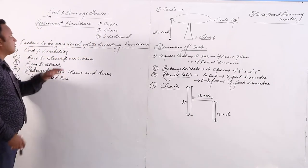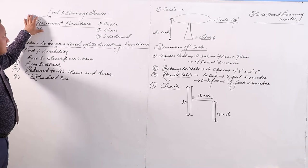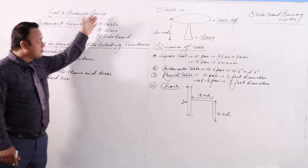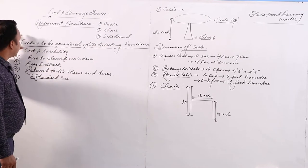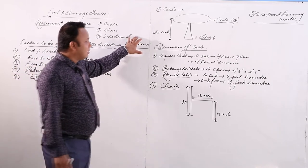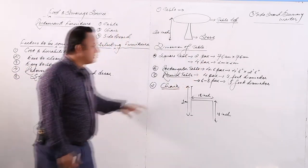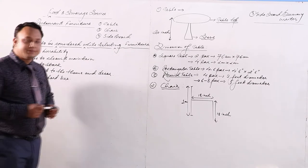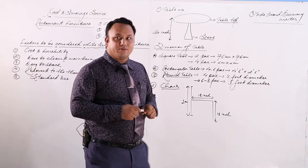In class 12, we will start from a topic called Restaurant Furniture. What is Restaurant Furniture? What are the different types of Restaurant Furniture used in a restaurant? What are the factors to be considered while selecting Restaurant Furniture? And the dimensions of different types of Restaurant Furniture. Before we go into Restaurant Furniture, let me define Food and Beverage Service.